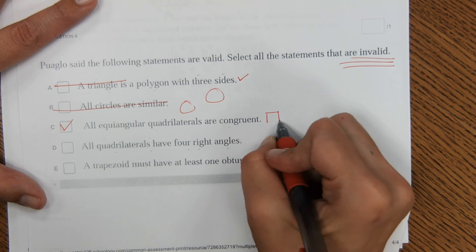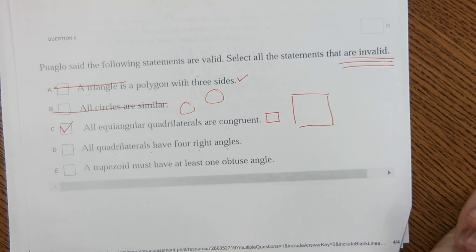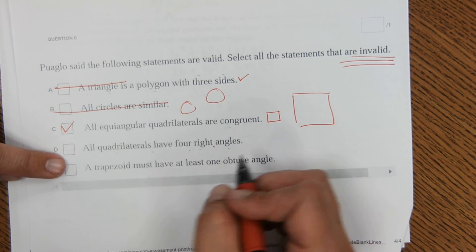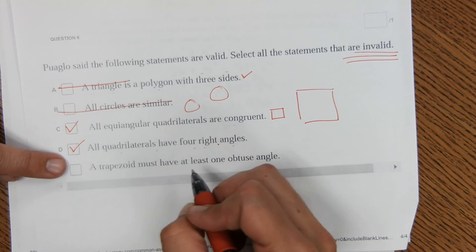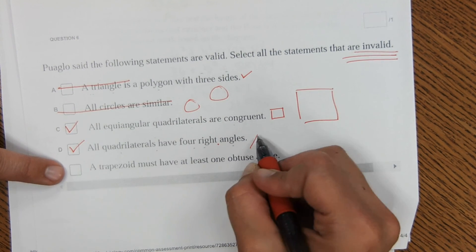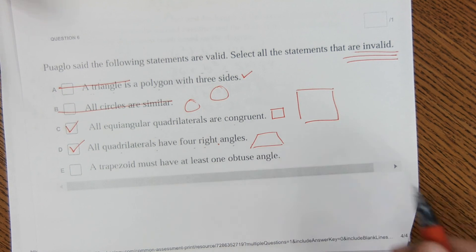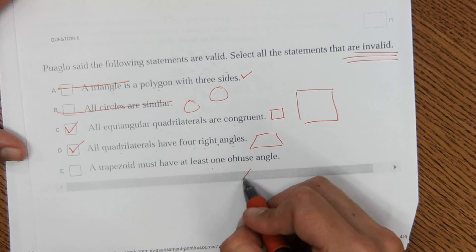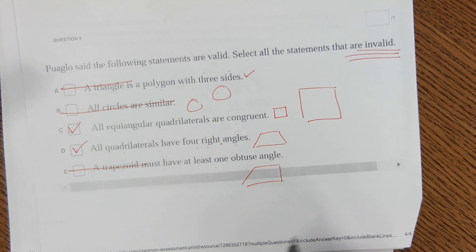Equiangular quadrilaterals, I mean, all the angles would be the same. Well, yeah, those aren't congruent. Their sides aren't the same length. All quadrilaterals have four right angles. No, so that is an invalid statement. For example, a trapezoid would have, is a quadrilateral that doesn't have four right angles. The trapezoid must have at least one obtuse angle. That is accurate, so that is not the correct answer.